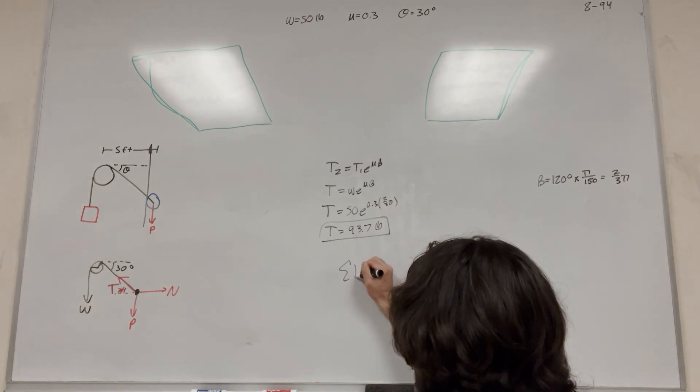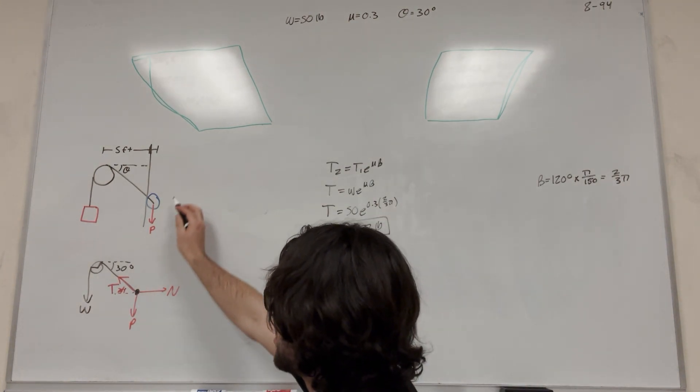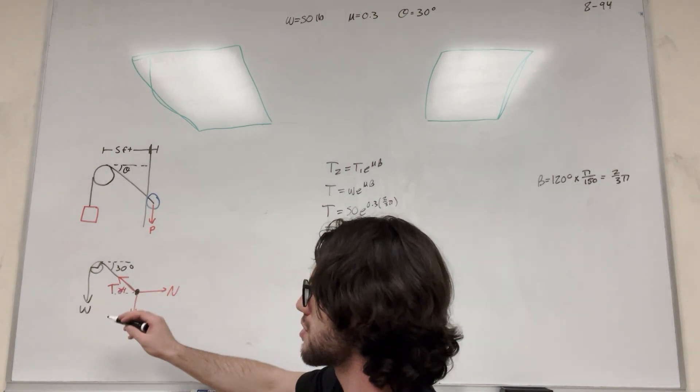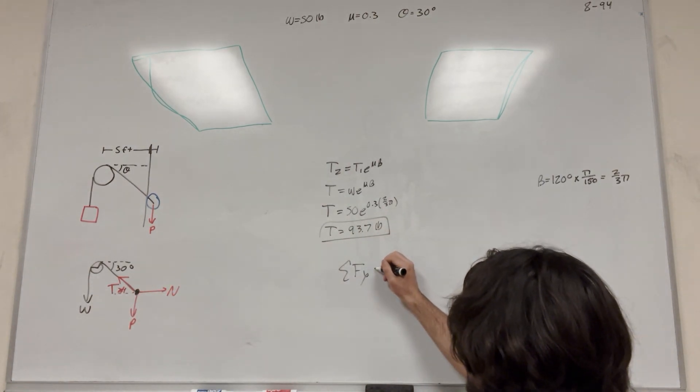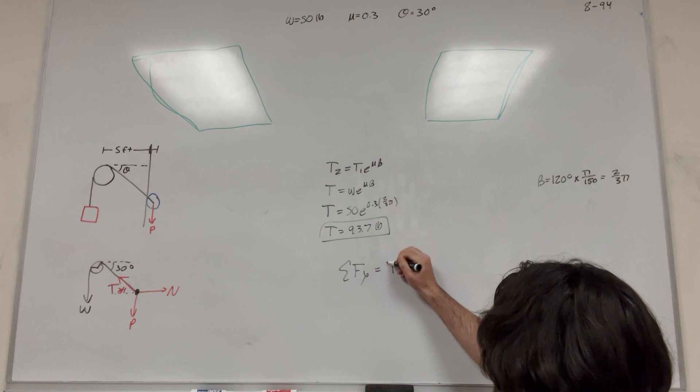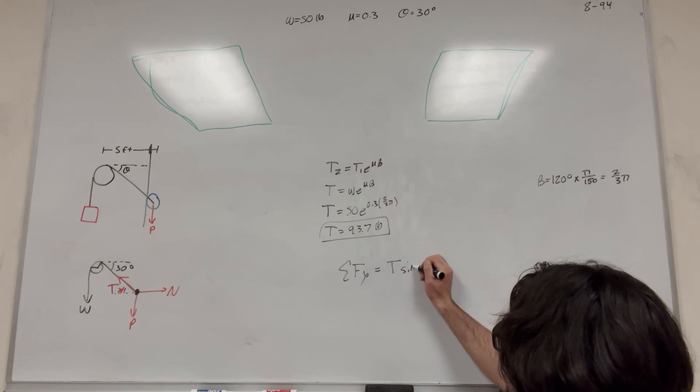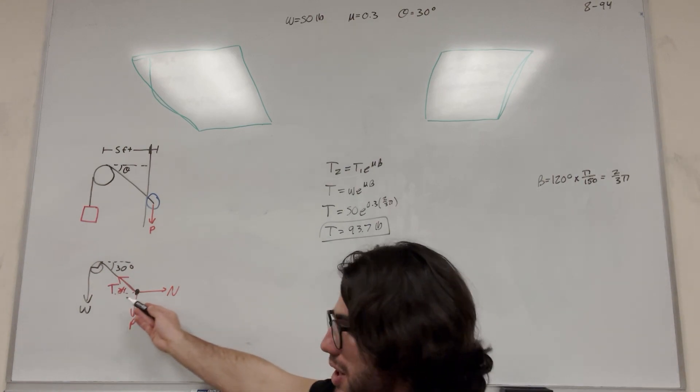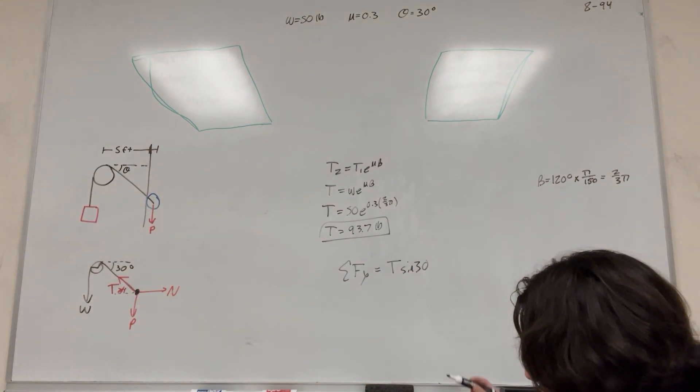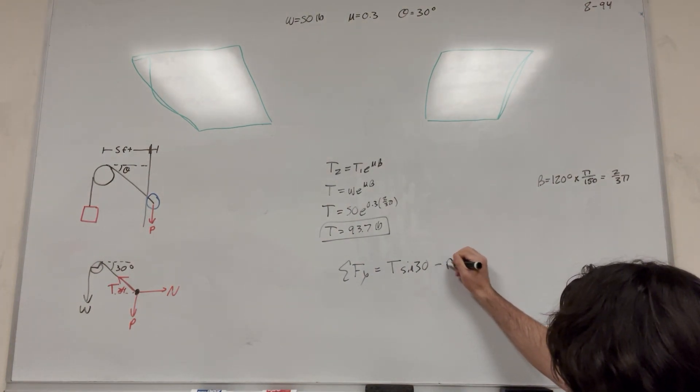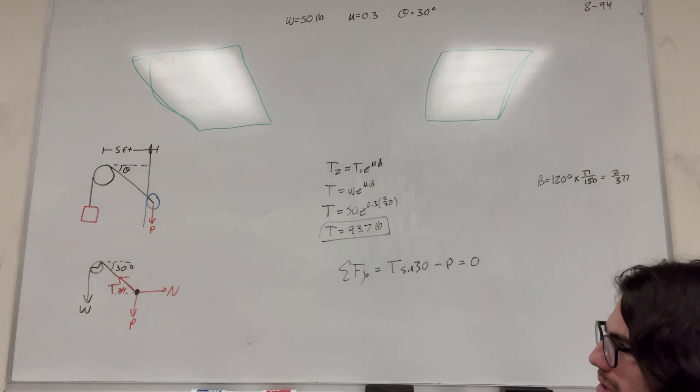So if you do sum of the forces in the Y, just looking at the roller here, it's equal to tension cosine of 30 degrees, because it's acting at a 30 degree angle there, and then minus P. And we know it's at equilibrium, so it's at zero.